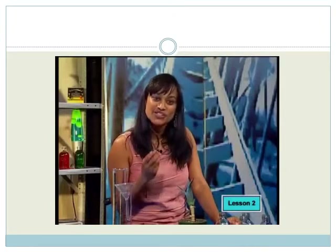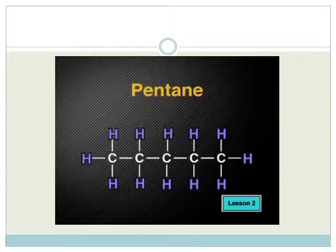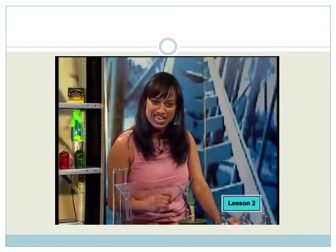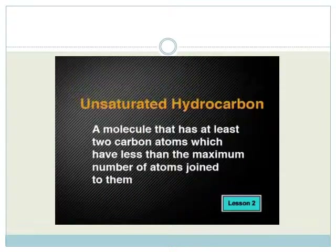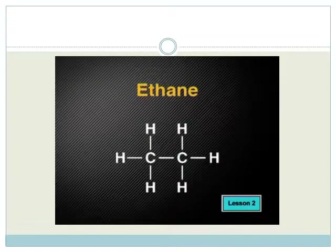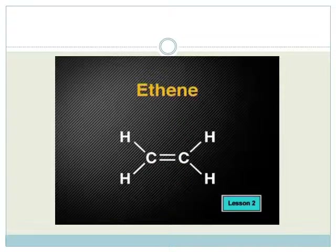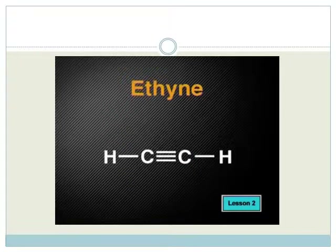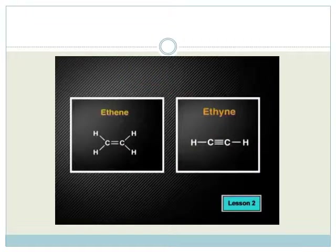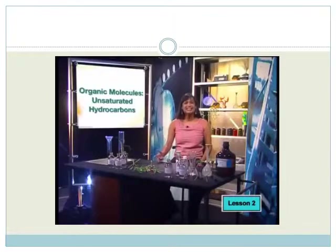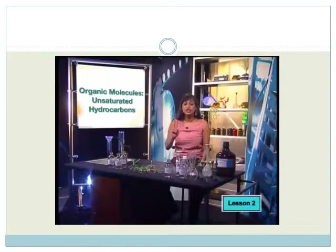These molecules are called saturated because each carbon in the molecule has the maximum number of atoms around it. Now, what about the term unsaturated hydrocarbon? An unsaturated hydrocarbon is a molecule that has at least two carbon atoms which have less than the maximum number of atoms joined to them. Look at ethane — each carbon has four atoms around it, the maximum number. But notice, in ethene, there are only three atoms bonded to each carbon, and in ethyne, there are only two atoms bonded to each carbon. In both these cases, the number of atoms around each carbon is less than the maximum of four. So an unsaturated hydrocarbon is a molecule in which there is at least one double or triple bond present between two carbon atoms.